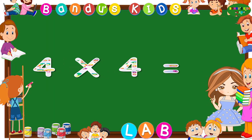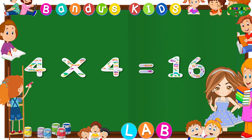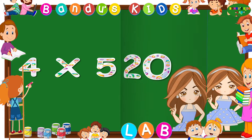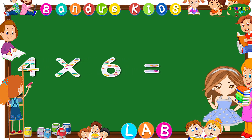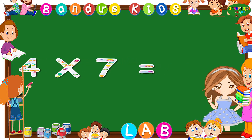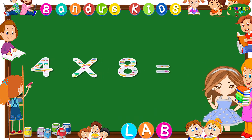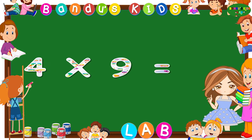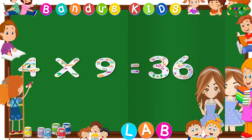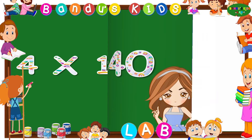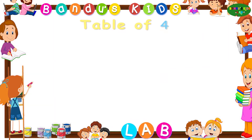Four fours are sixteen, four fives are twenty, four sixes are twenty-four, four sevens are twenty-eight, four eights are thirty-two, four nines are thirty-six, four tens are forty. Now let's revise the table of four